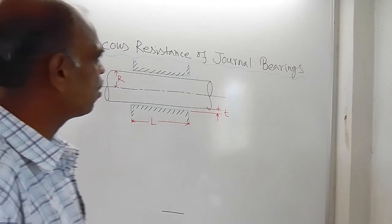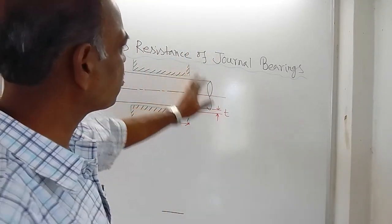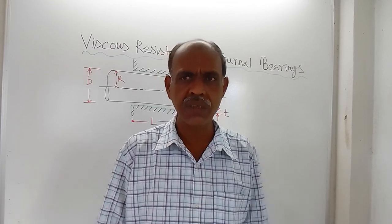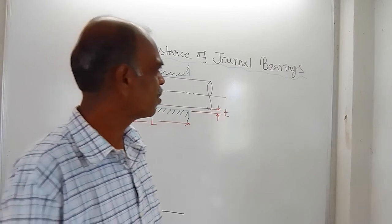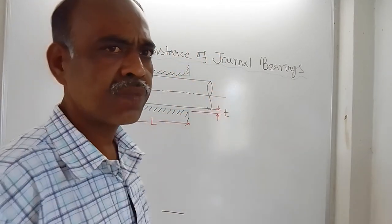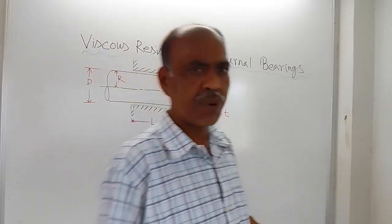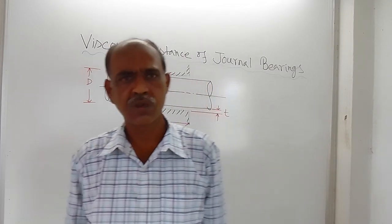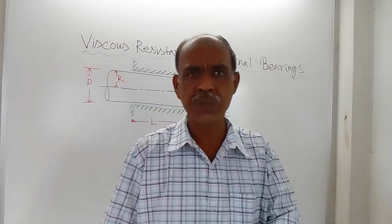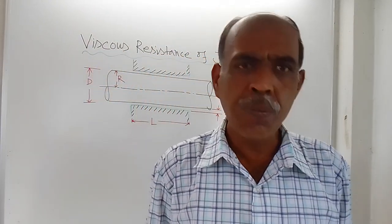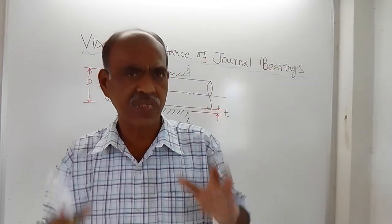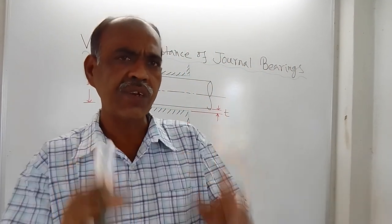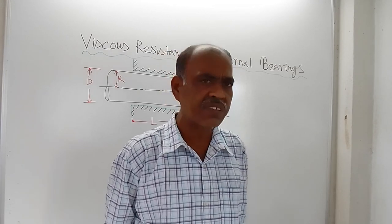Here we are going to discuss viscous resistance of journal bearings. You know that there are more bearings such as full step bearing and collar bearing; for all the cases this analysis will be made in different videos. In this video only this topic will be covered. For machine parts, there are moving parts, and for moving parts lubrication is required to minimize the wear and shear, to minimize the resistance. So lubrication is required, and for the purpose of lubrication, oil is used. Different oils are there — not a single one — and for different purposes, for different machine parts, different oils are used.